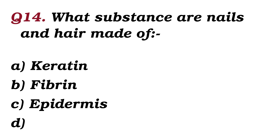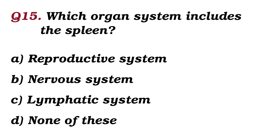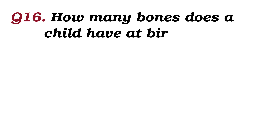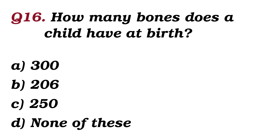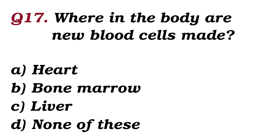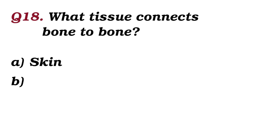What substance are nails and hair made of? The answer is keratin. Which organ system includes the spleen? The answer is the lymphatic system. How many bones does a child have at birth? The answer is 300.